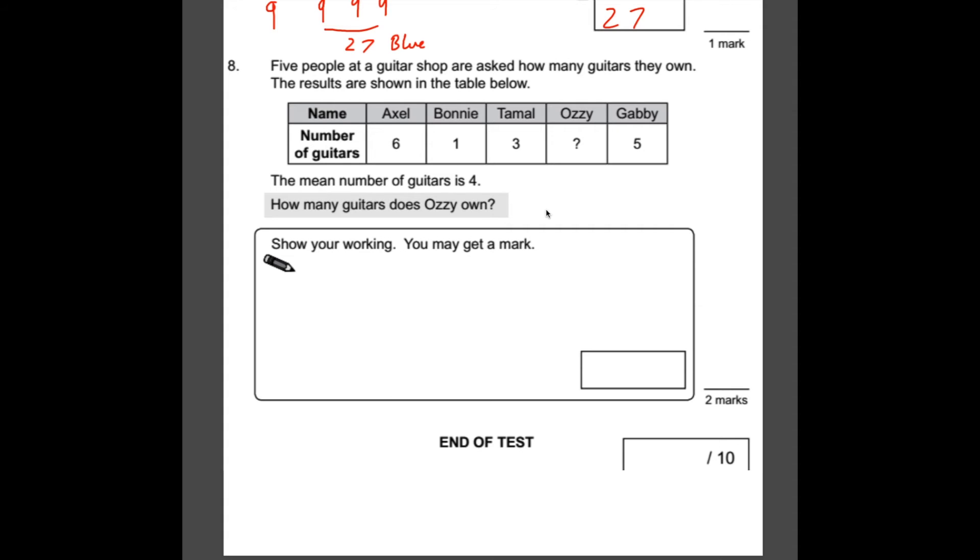Number 8, five people at a guitar shop are asked how many guitars they own. The results are shown in the table below. The mean number of guitars is 4. So how many guitars does Ozzy own? Well, the mean is the average. And when we find out the mean, what we need to do is add up our total number of guitars and divide it by how many people there are. So in this case, there are five people that they asked. So we're going to have to have a number that when you divide by 5 makes 4. So straight away then, our number needs to be 20 because 20 divided by 5 is 4.